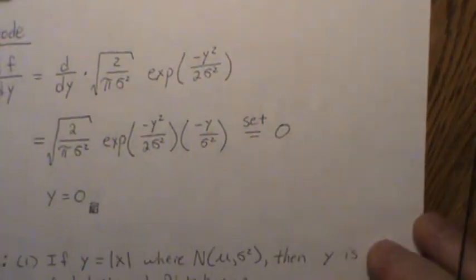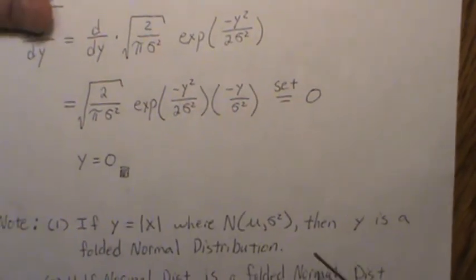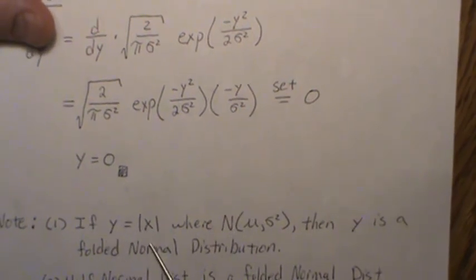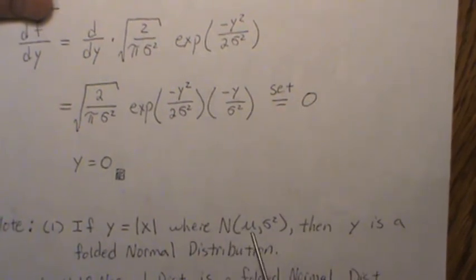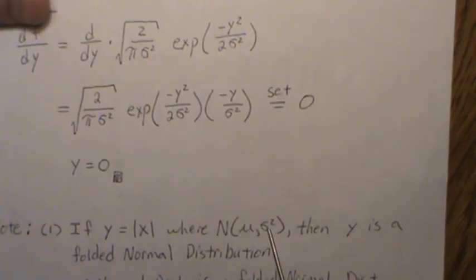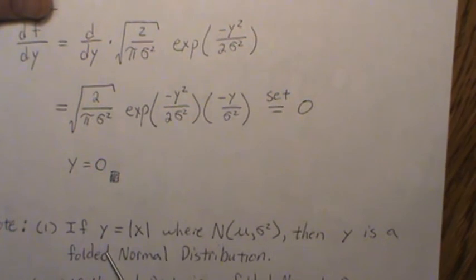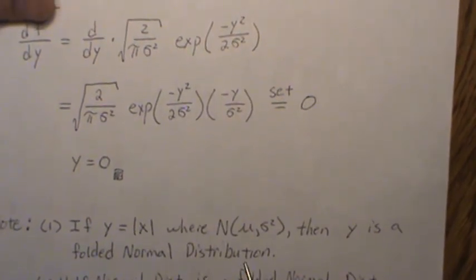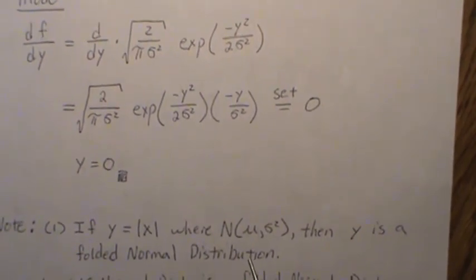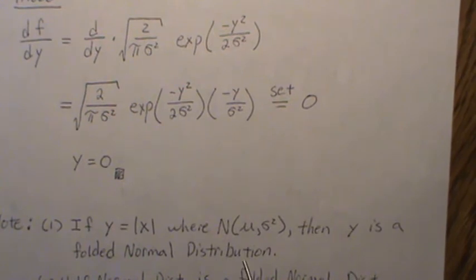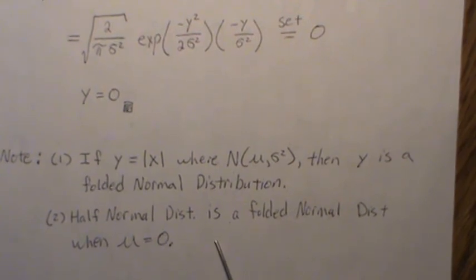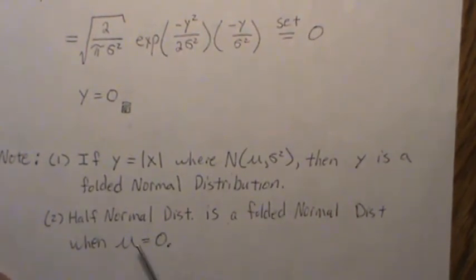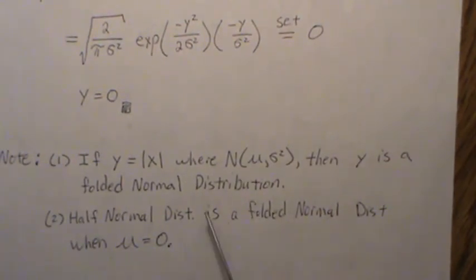Now, a couple notes, and then we'll end the video. The first one is, if y is equal to the absolute value of x, where x is a normal with some mean and some sigma squared, then y is actually called a folded normal distribution. And I have a video called mean and variance of a folded normal distribution, if you want to look into that. So the half normal is actually a folded normal distribution when the mean is zero. So they're related.